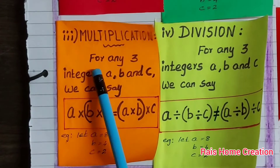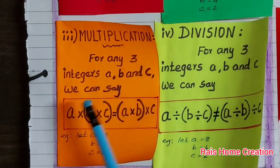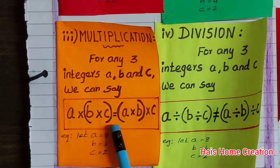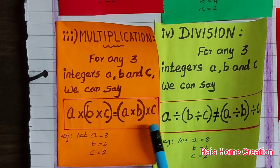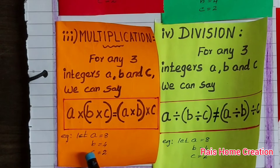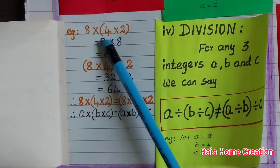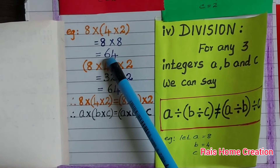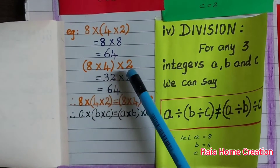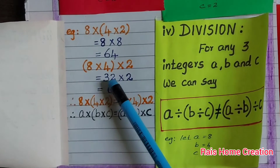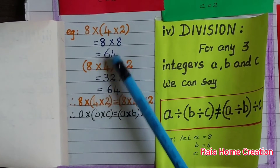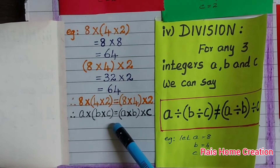Multiplication. For any three integers A, B and C, we can say (A into B) into C equal to A into (B into C). Example: let A equal to 8, B equal to 4, C equal to 2. 8 into 4 into 2: 4 twos are 8, 8 into 8 equal to 64. 8 into 4: 4 fours are 32, 32 into 2 equal to 64. Both answers are same. Hence, the condition is equal.